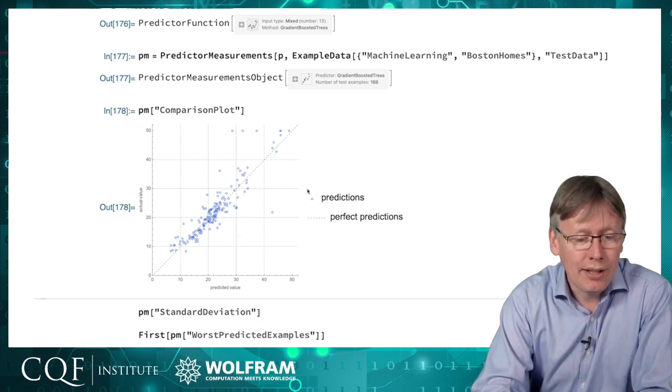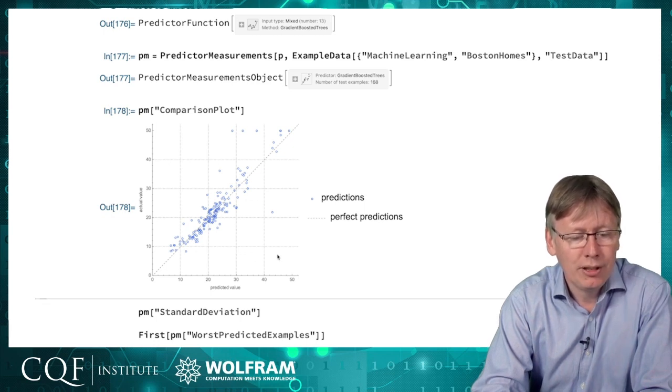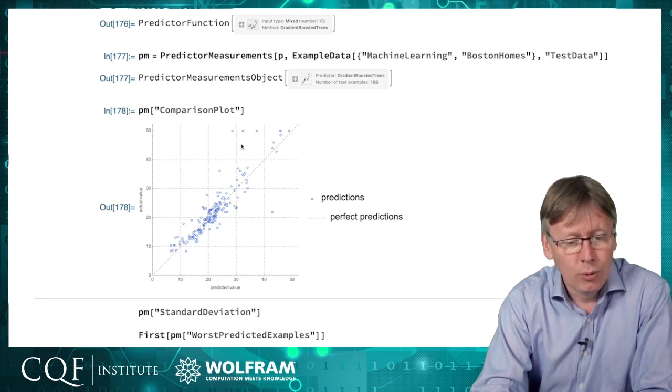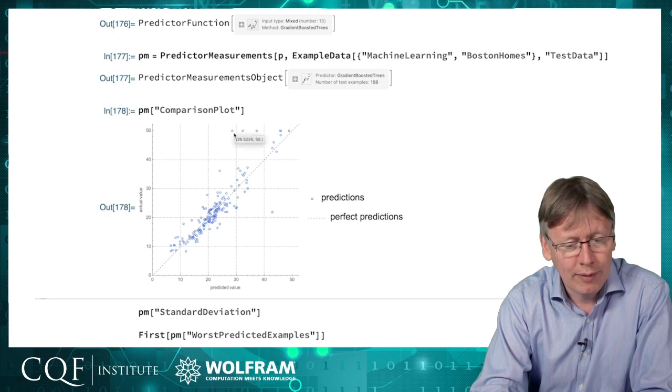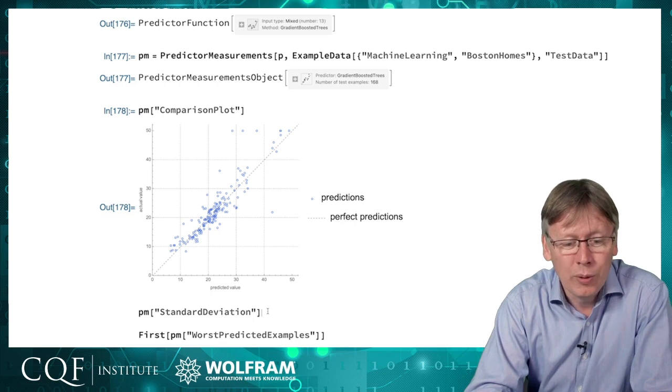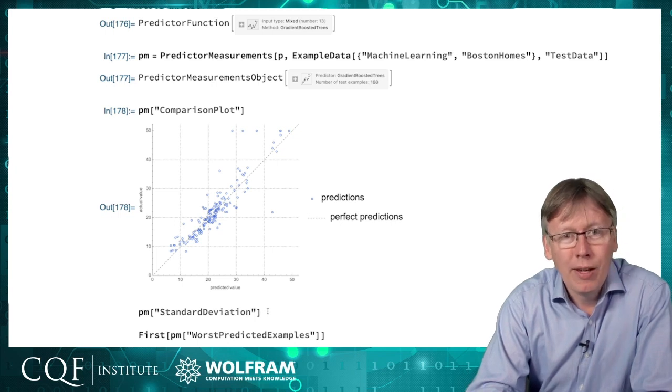At a glance, we can see here that it's done a fairly good job for houses in the middle price range. For very low-priced houses, it has a tendency to under-predict and also for very high-priced houses, it's having a tendency to under-predict. Maybe this is useful for typical houses, but if we were using this as some kind of automatic estate agency tool, we should call in a valuation expert for anything that's outside of the $10,000 to $35,000 range.